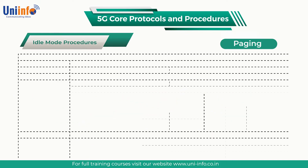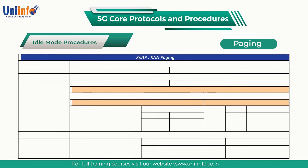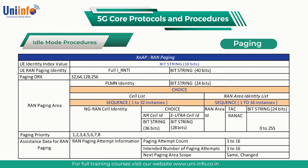The XNAP RAN paging message is represented in the table. Alternatively, all cells within the RNA may belong to a single base station using the CU or DU split architecture. In this case, it is not necessary to rely upon XN connectivity.